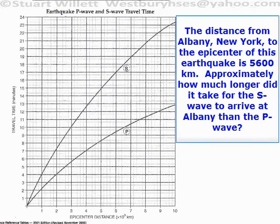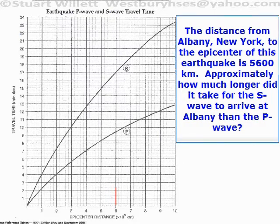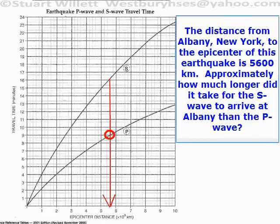So for example, between 5 and 6 would be 5,000 kilometers, 5,200, 5,400, 5,600, 5,800, 6,000 kilometers. We want 5,600 kilometers — I'm pointing to it right now. You go up that line to where it intersects with the P line and the S line. That's the P line, and up there, that's the S line.